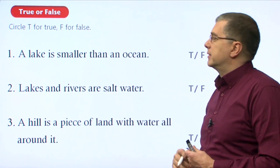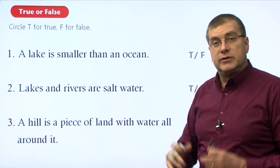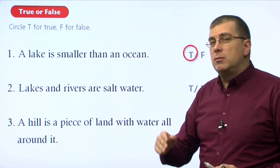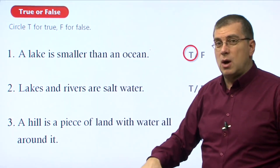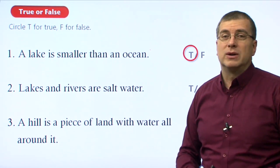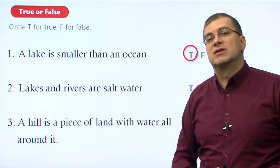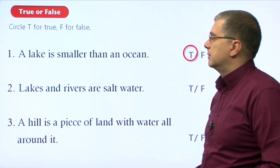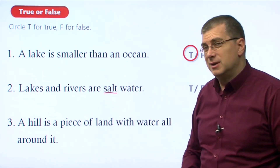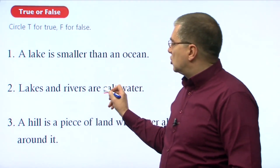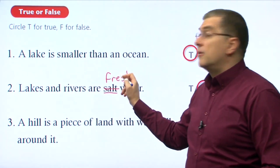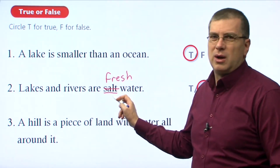Let's move on to our true-false questions. Number one: a lake is smaller than an ocean. Is that true? Yes, absolutely. Oceans are huge, especially as we saw in Unit 14. Lakes are always smaller than oceans — true. Number two: lakes and rivers are salt water. That doesn't sound right — that's false. We need to change 'salt' to 'fresh.' Lakes and rivers are fresh water, not salt water.